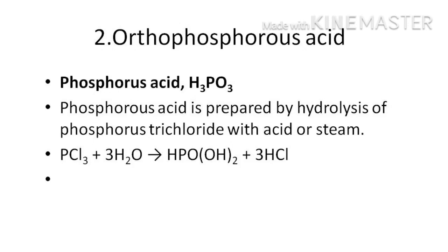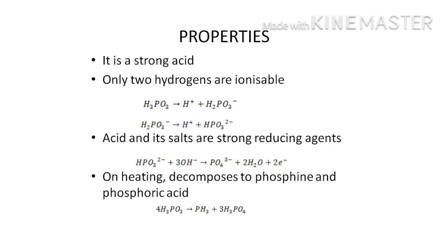Next is orthophosphorus acid, also known as phosphorous acid. It is obtained by the hydrolysis of phosphorus trichloride. It is a colorless, delicate, crystalline solid and is extremely soluble in water. It is a strong acid. Although it contains three hydrogen atoms, only two are ionizable; hence it is a dibasic acid, ionizing in two steps as represented by these two equations.